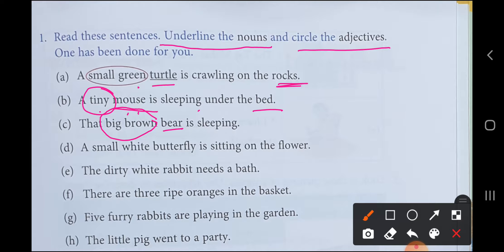Next, a small white butterfly is sitting on the flower. The name of flower, the name of animal, the name of insect, all are nouns. First the flower, this is noun. Butterfly, this is noun. And how is the butterfly? Butterfly is small white, so this is the adjective of butterfly. Small white, we will circle it.